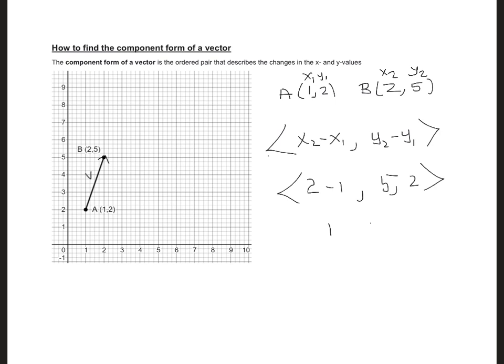So we get 1, 3. So using the head and tail we have been able to come up with the component form of a vector.